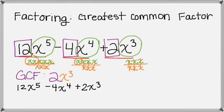So when we're writing out our final answer, the GCF is going to go right in the front. So I'm going to write my final answer over here in the corner. So that's 2x cubed.